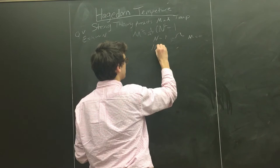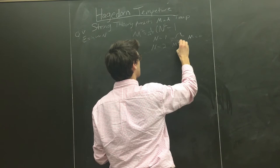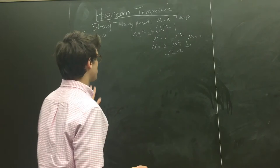For n equals 2, you know, we'll get the first, we'll get a massive state, m squared equals 1 over alpha prime. Anyway, so two, okay, I don't want to get too far distracted. Anyway, so we have this, this relationship.